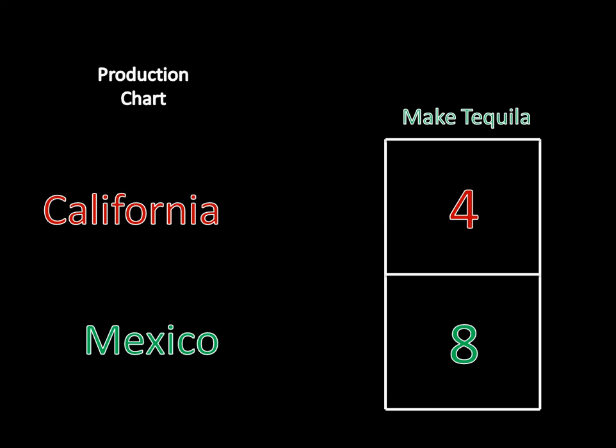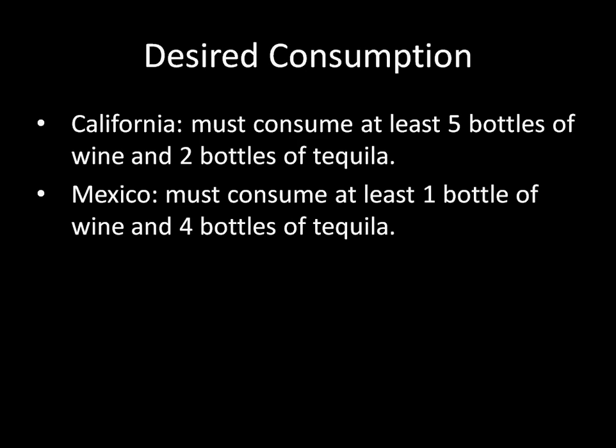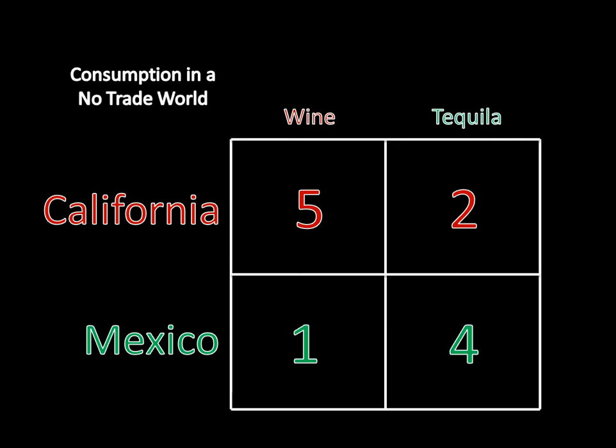The states have the following desired consumption: California must consume at least five bottles of wine and at least two bottles of tequila, whereas Mexico must consume at least one bottle of wine and four bottles of tequila. Based on what I've set up here, they can meet these requirements all by themselves. So if there's no trade, California produces five bottles of wine and two bottles of tequila for itself and consumes those. Mexico would produce one bottle of wine and four bottles of tequila, and again it would consume all of those.